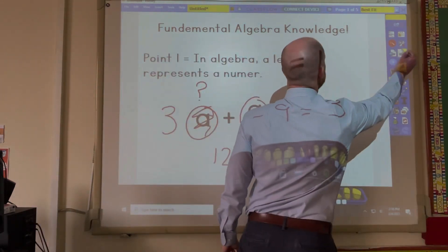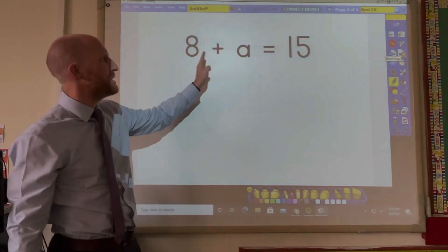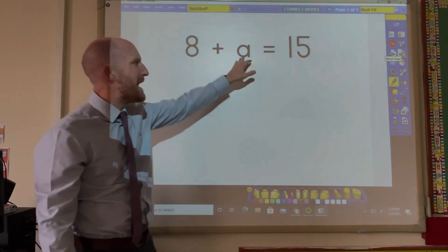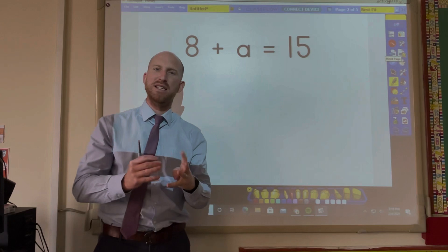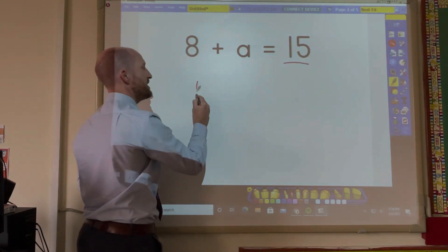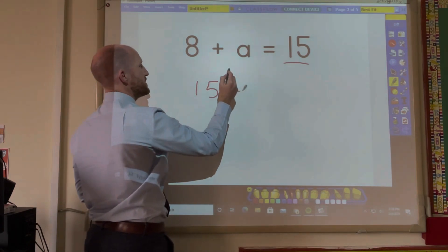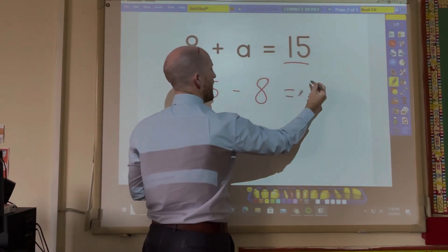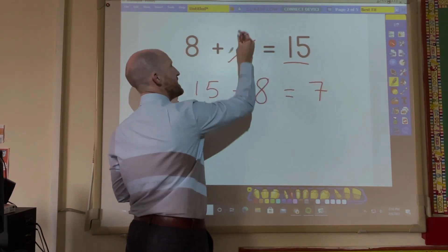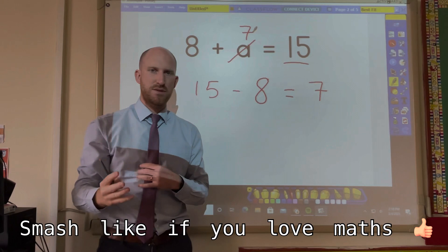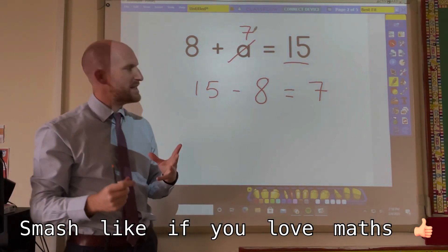Let's look at another example. 8 plus A equals 15. So A again is representing a mystery number. And if I take the answer and use the other numbers that I have, 15 take away 8, I can find out that A was representing 7. So you've kind of got to be a detective with algebra.